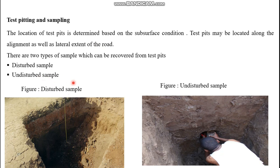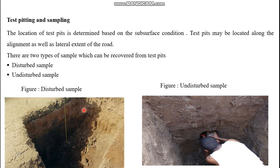Disturbed samples are samples in which the natural structure or mineralogy has been altered by excavation, whereas undisturbed samples are samples in which the natural structure of the soil is not disturbed — though it is difficult or impossible to obtain 100% undisturbed samples. Disturbed samples are used for classification purposes such as Atterberg limits, free swell tests, specific gravity tests, or gradation tests. Undisturbed samples are used for determining the shear strength parameters or load-bearing resistance of the soil, and are recovered from the wall of the test pit.